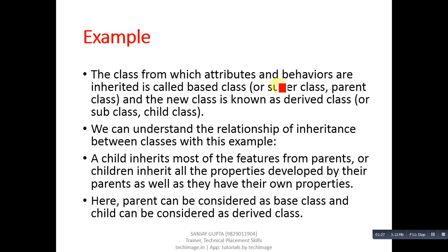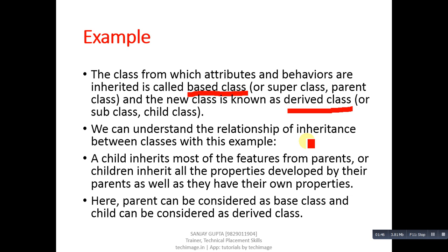The class from which attributes and behaviors are inherited is called the base class. The older class is known as base class, super class, or parent class. The new class is known as derived class, subclass, or child class. For example, a child inherits most of the features from their parents.